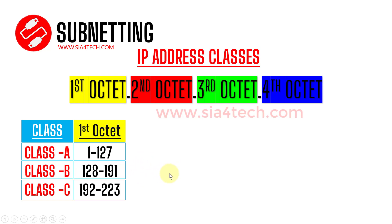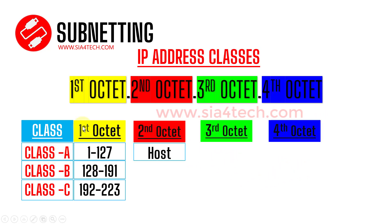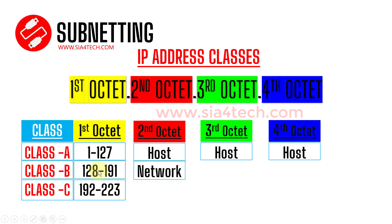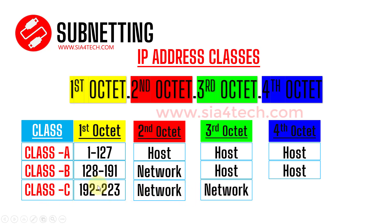The most important thing you learn from the class is how the remaining octets are allocated for the network segment or the host segment. For Class A, only the first octet is allocated for the network segment, and the rest are for the host. For Class B, the first and second octets are allocated for the network, and the third and fourth for the host. For Class C, the first, second, and third octets are allocated for the network, and only the fourth octet is allocated for the host.